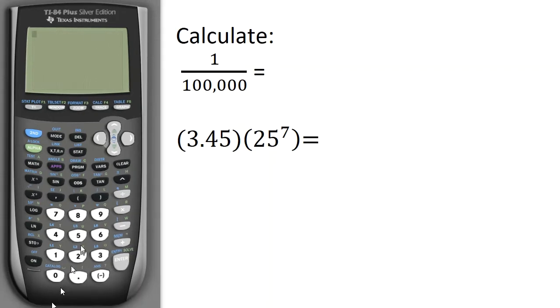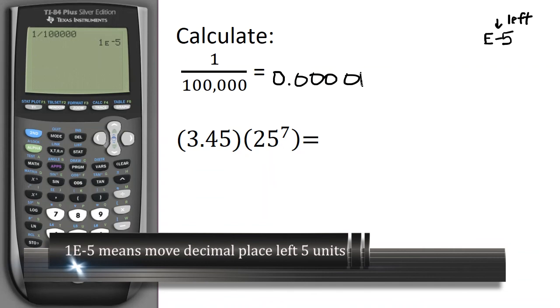Next I want to do these calculations. I have 1 divided by 100,000, and that's going to give me 1E-5. And you'll remember that E-5, that's scientific notation, and because it's negative there, that means take the decimal point, which is in front of the 1, and take it to the left 5 places. So that's 0.00001.